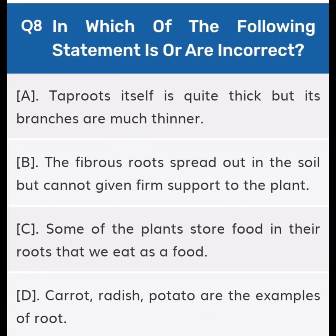Next, question number eight: Which of the following statements is or are incorrect? Option A: Tap root itself is quite thick but its branches are much thinner. Option B: The fibrous roots spread out in the soil but cannot give firm support to the plant. Option C: Some plants store food in their roots that we eat as food. Option D: Carrot, radish, potato are examples of roots.